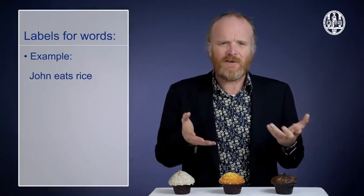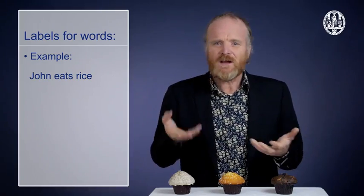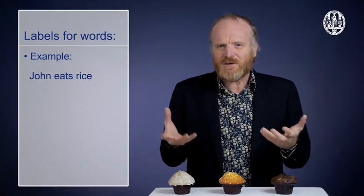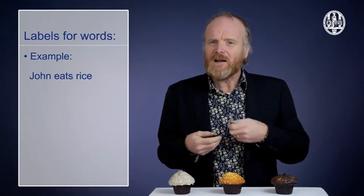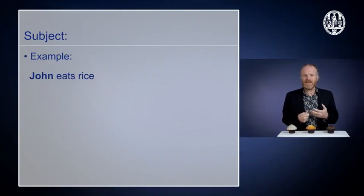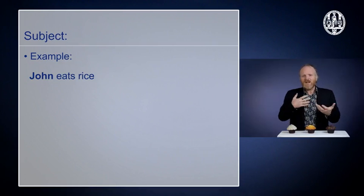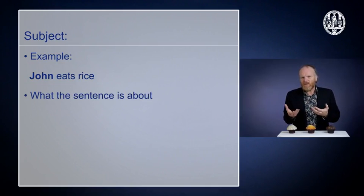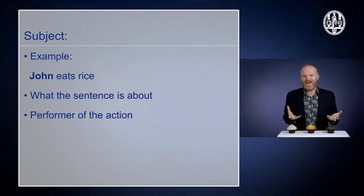Let's take a simple English sentence: John eats rice. That has three parts — three words: John, eats, and rice. But they also correspond to traditional parts of a sentence: a subject, a verb, and an object. John in this sentence is the subject. Some people say it's because the sentence is about John, or because John is performing the eating action — John is obviously the person who's really eating.